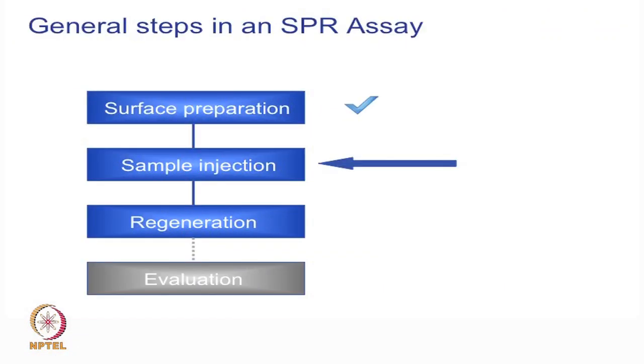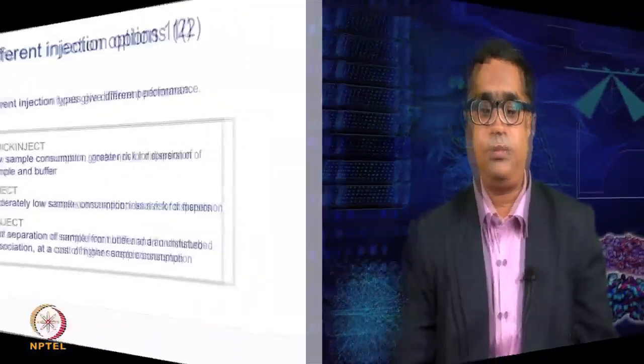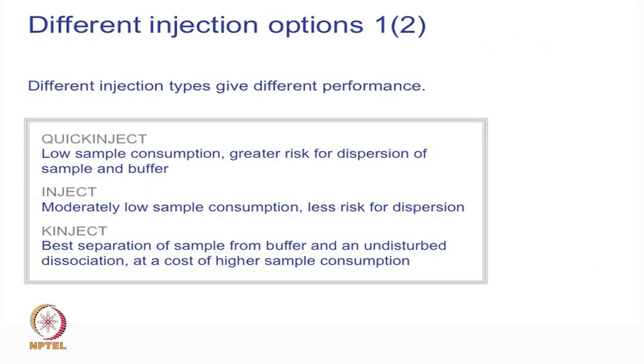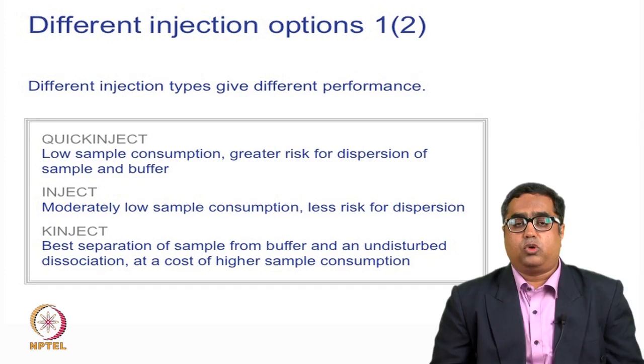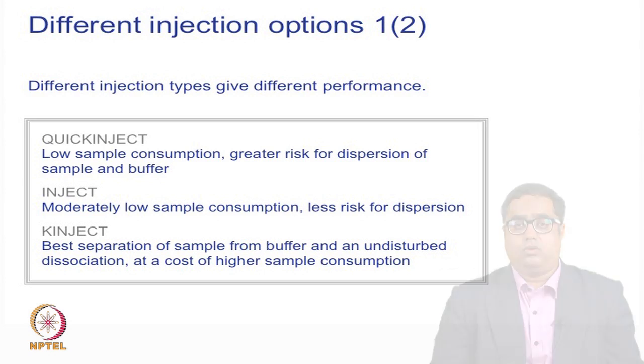The next important step for developing an assay is sample injection. In sample injection mode, the way molecules are injected depends on the type of molecular interaction being studied. If you are screening, there is a slower flow rate injection. For kinetics, a certain flow rate is used. The different modes of injection are generally called quick inject, kinject, and inject, and these modes change depending on whether you are doing screening, kinetics, or thermodynamics.